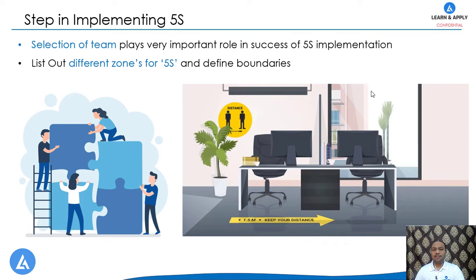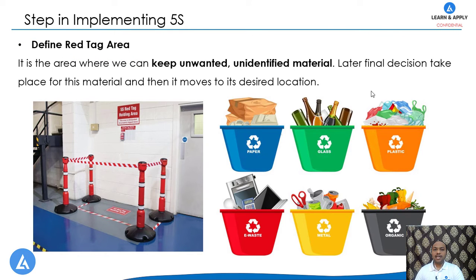The next step is to define the 5S Red Tag area. This is the area where we keep unwanted and unidentified materials. In this area we also maintain a 5S Red Tag worksheet, keeping entries of all these materials. After that, we set the frequency at which the leadership or working team visits that red tag area to make the final decision on whether the material is required for a particular department or should be scrapped.